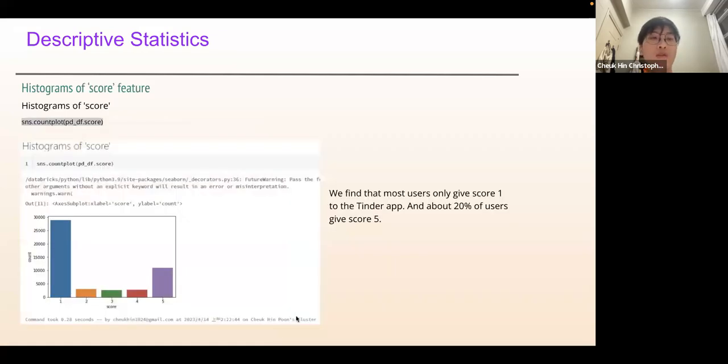For the histogram of score feature, we find that most users only give a score of 1 to the app and about 20% of users give score 5. It's not a normal distribution. The distribution is quite extreme.